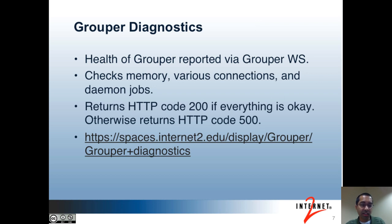The next topic is Grouper diagnostics. If you're running Grouper in production, you can have your monitoring software, such as Nagios, hit the Grouper diagnostics page every so often to make sure that there are no major issues. This basically reports on the health of Grouper and is part of Grouper web services. It performs various checks, including making sure that you have free memory available, making sure that there aren't any connection issues with the Grouper registry or your subject sources, and making sure that all daemon jobs have had at least one success recently. You're able to exclude specified daemon jobs as well. If everything looks okay, a 200 HTTP code is returned; otherwise, a 500 HTTP code is returned. I've included a link to the Grouper diagnostics wiki page for more information on the configuration options.